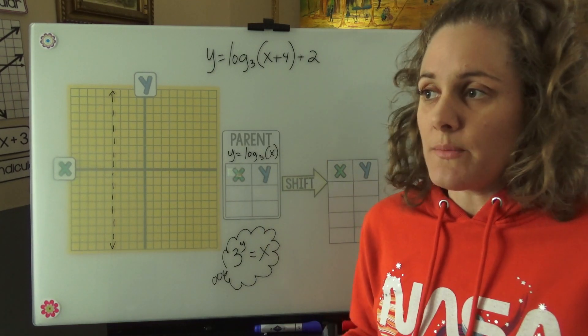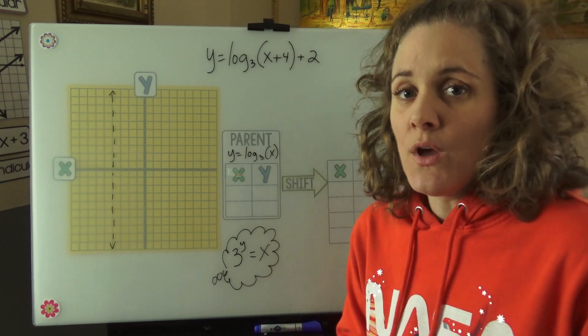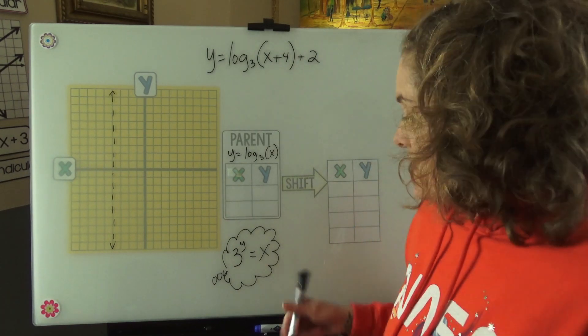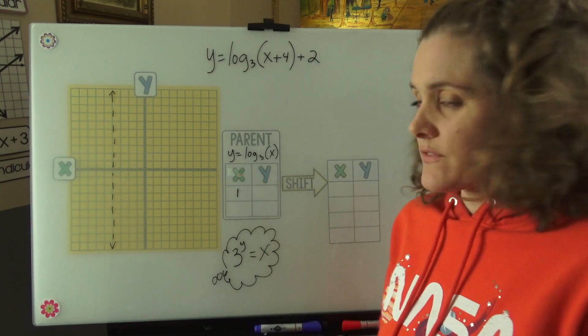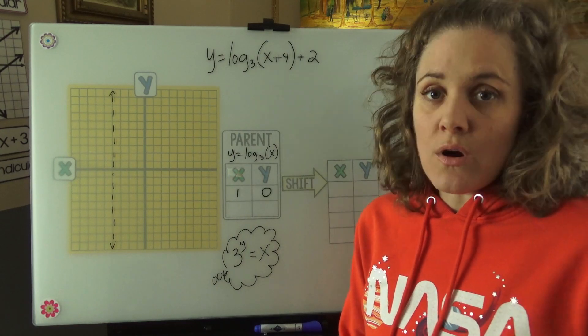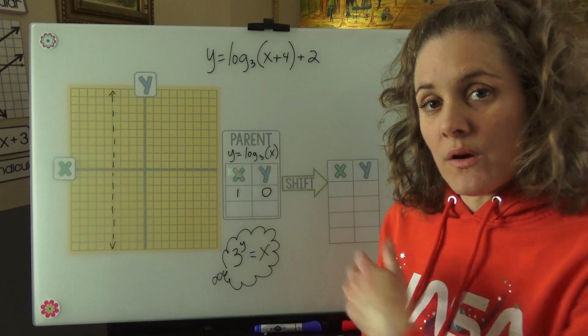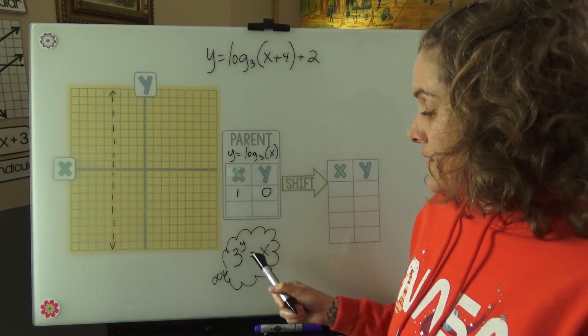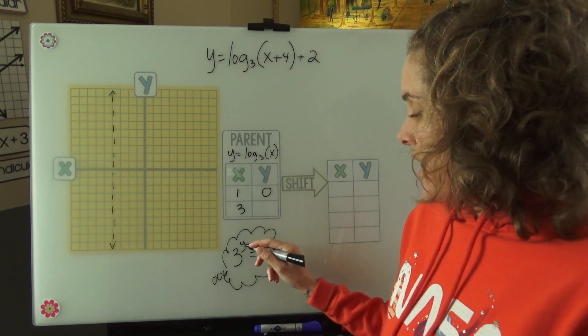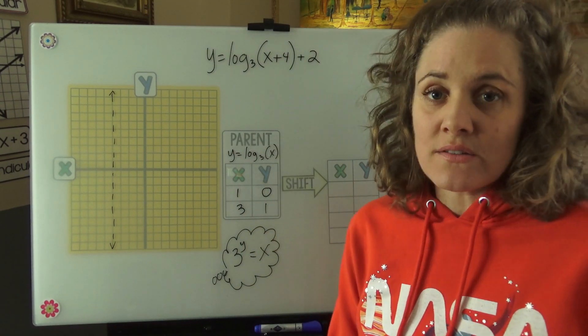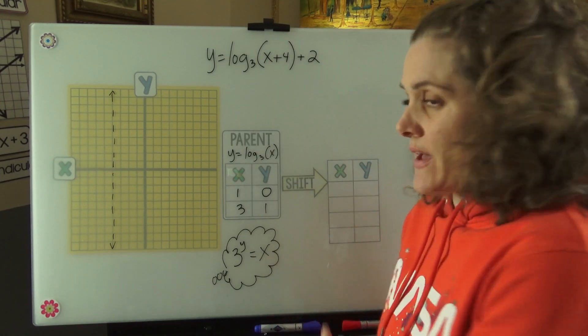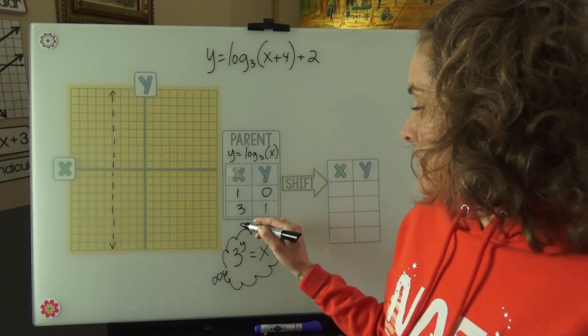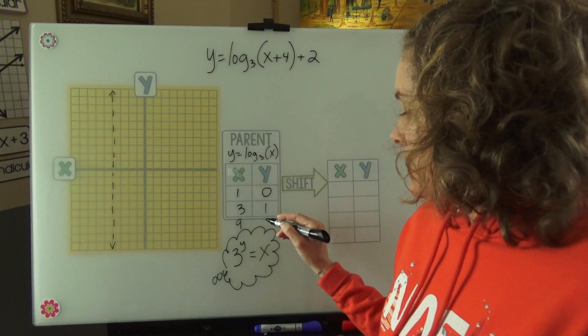When we complete our parent table, we want to make the points as easy as possible because there's a lot of crazy points that can happen when we're looking at logs. So let's think about what nice x values we could have. What about 1? If my x value is 1, what would y have to be? Well, 3 to the 0 is 1. Our y value would be 0 to make our x value 1. So see how we're working backwards and that's what these logs are all about. Another x value that would be easy would be 3 because I know that 3 to the 1 is 3. So 3 to the 1, y is 1, is 3. And if we wanted to continue the pattern, we could think about another x value that would be easy. I know that 3 squared, 0, 1, 2, 3 squared is 9. So a 9 would come from a y value here of 2.